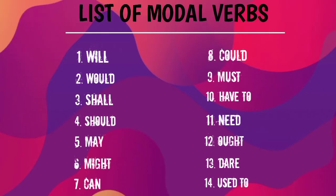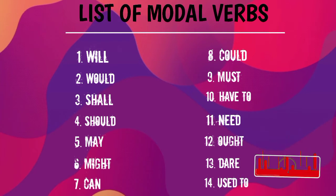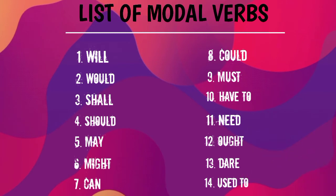Here is the list of modal verbs: will, would, shall, should, may, might, can, could, must, have to, need, ought, dare, and used to. This is the first part of modal verbs and we will be covering the first eight modal verbs. The remaining ones will be covered in the next part.